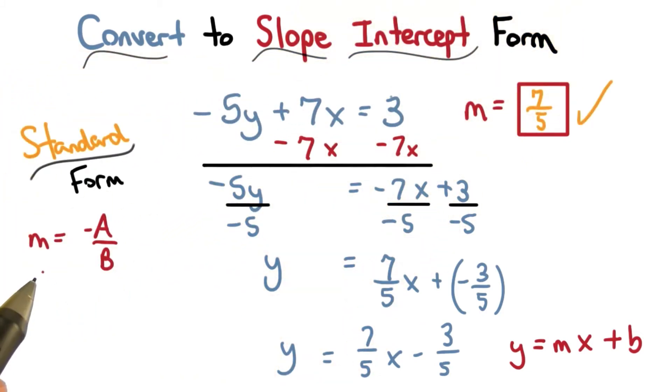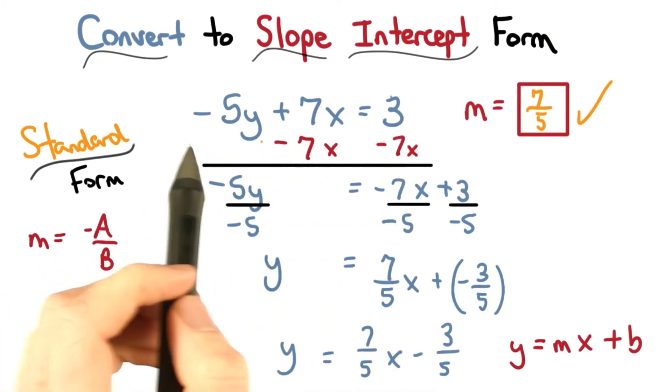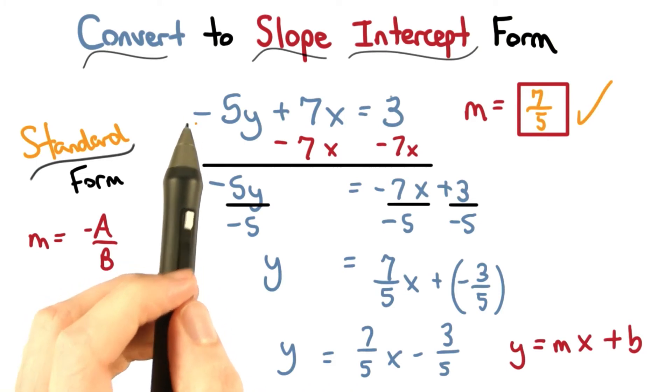If you thought about it in terms of standard form, you would have done negative a divided by b. You want to be really careful though. This is not in standard form. We need to write it in standard form first.